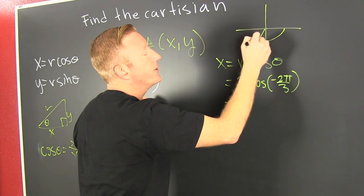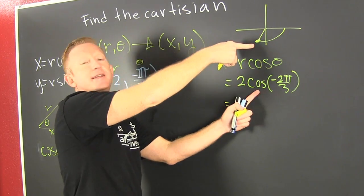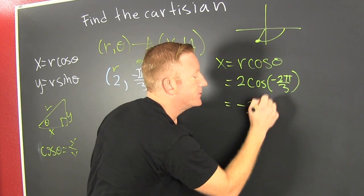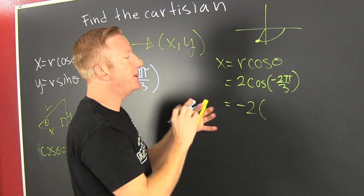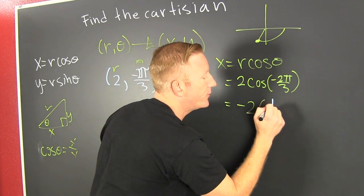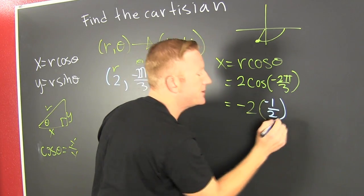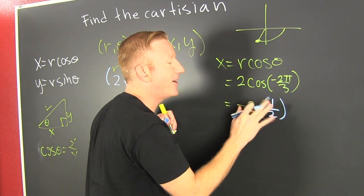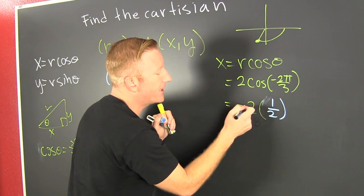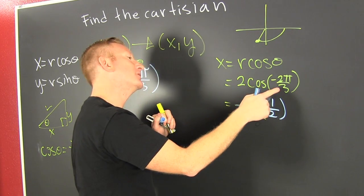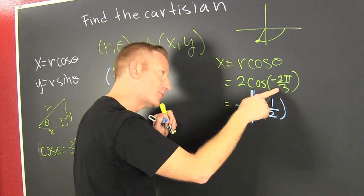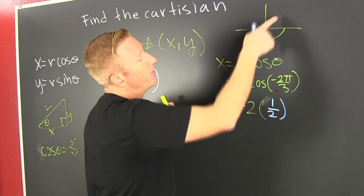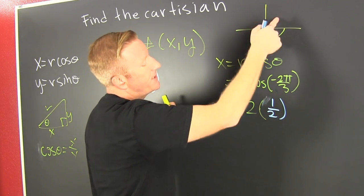That's going to be negative because we're to the left of the y-axis. And that's going to be minus 2 times... that minus sign came from the cosine of 2π over 3. The cosine of 2π over 3 is 1 half.